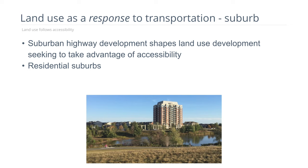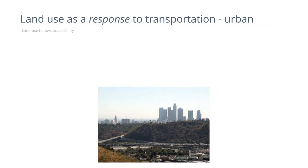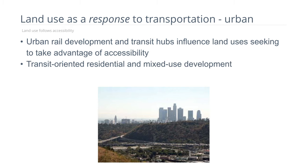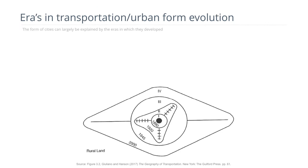This explains the development of residential suburbs as well as the suburbanization of employment. The fourth and final way is land use as a response to transportation in urban areas — the notion that developing transit hubs and rail transit will lead to clustering of development around stations. All four distinctions are true to some extent; it's an interacting system where transportation affects land use and land use in turn affects transportation.